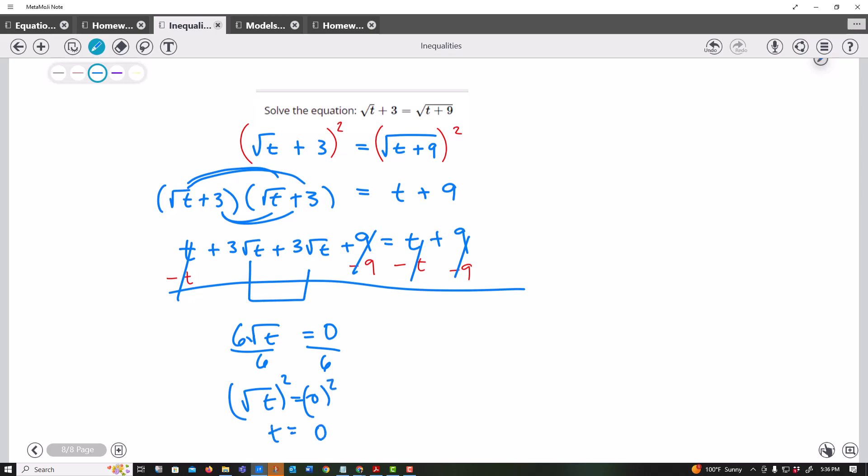And as always, you should plug it back in to see if it works. So the square root of 0 plus 3 equals the square root of 0 plus 9. That of course is just 0, that's 3. The square root of 9 is 3. And yes, it works.